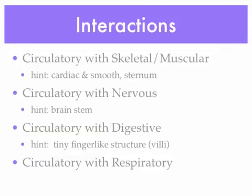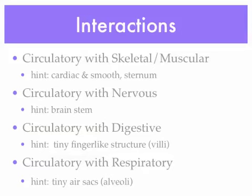Finally, we're going to talk about the circulatory system with the respiratory system. Think about the tiny air sacs in your lungs called alveoli — remember what happens at those tiny air sacs. Those air sacs are surrounded by capillaries, and at the site of the capillaries, oxygen and carbon dioxide trade places within the bloodstream. Oxygen enters the bloodstream while carbon dioxide exits, so the carbon dioxide can be released through the lungs.